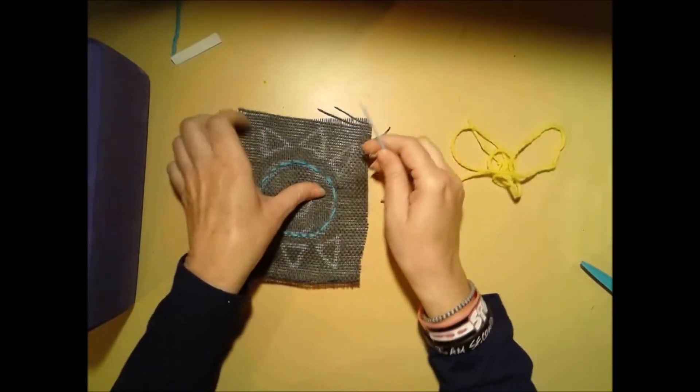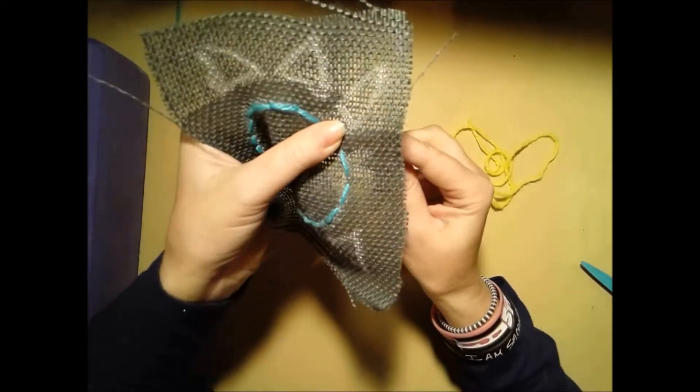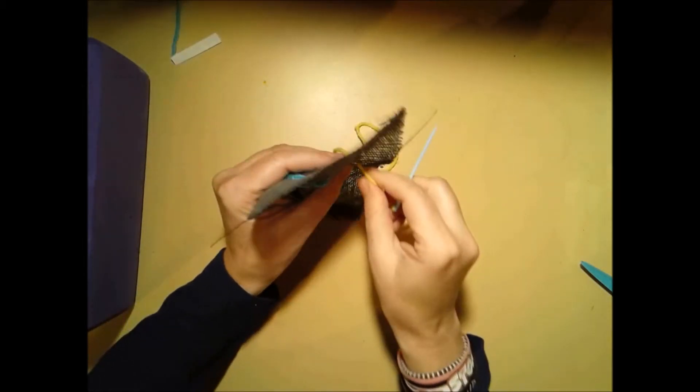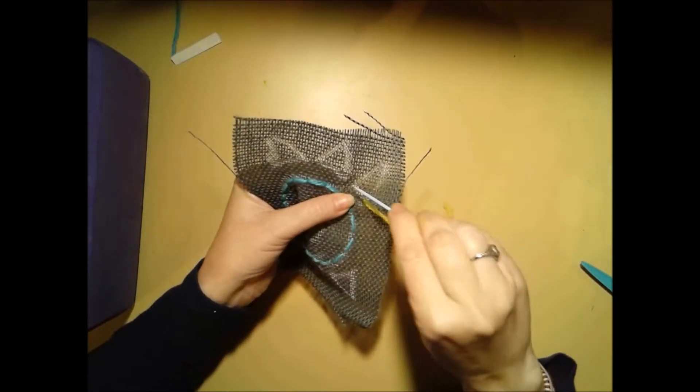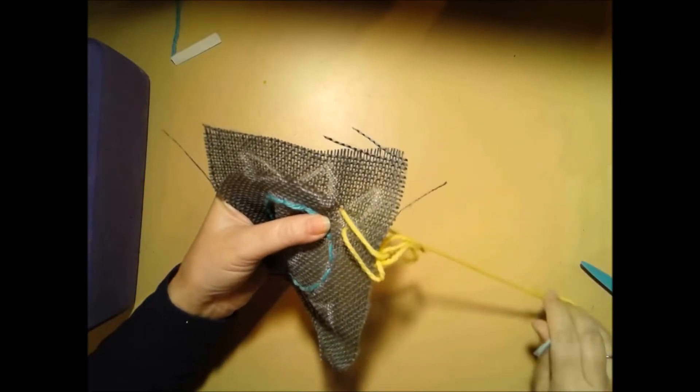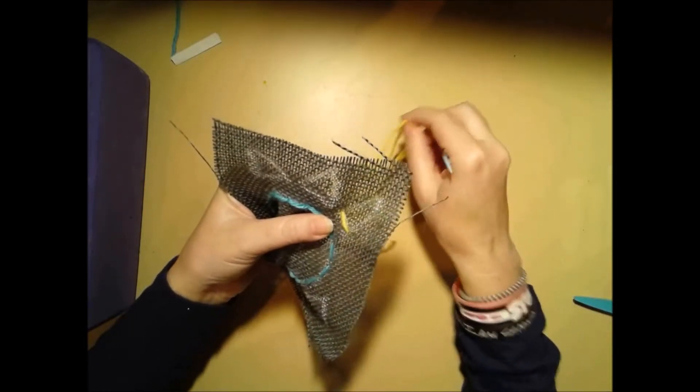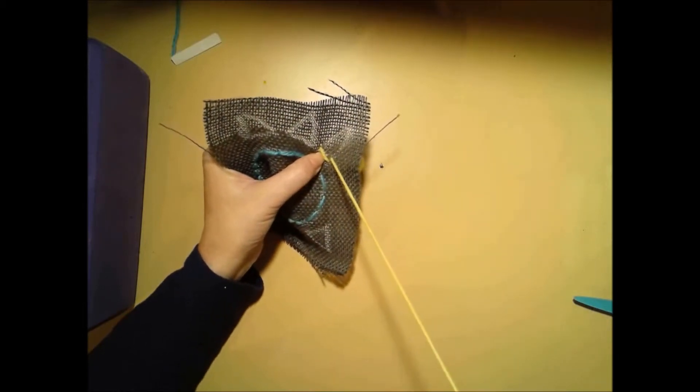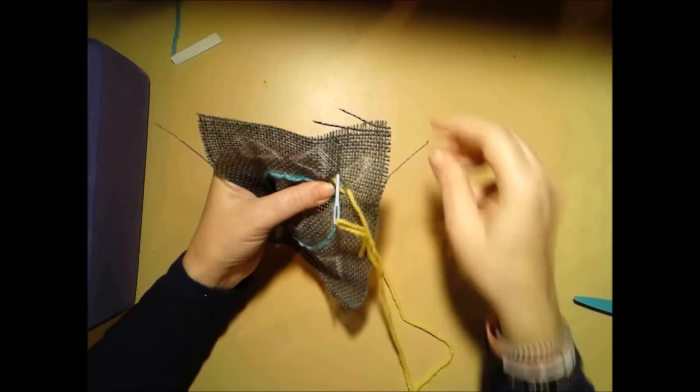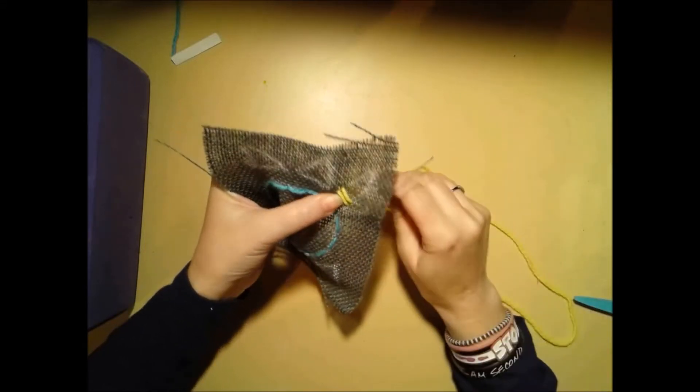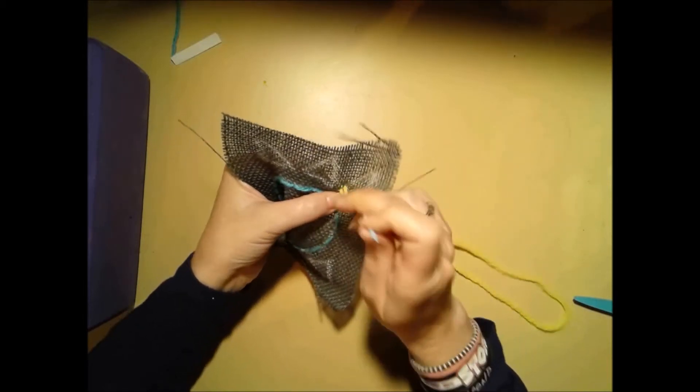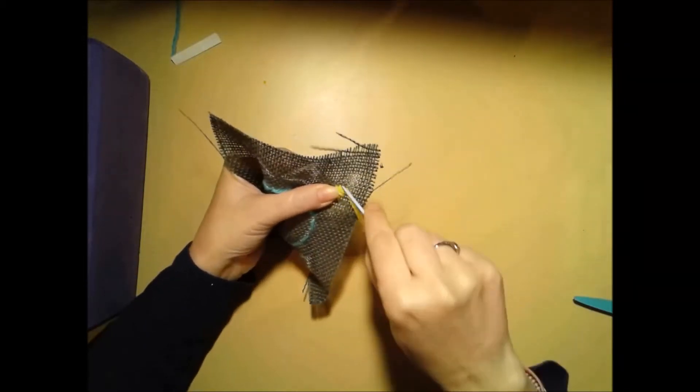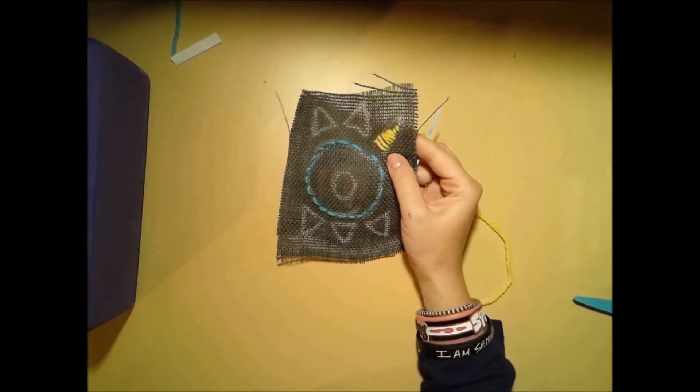To do a satin stitch, you're going to start in the back again. Just find where you need to go. Pull it up all the way, keep pulling until it stops. And then I'm going to go straight across. And then I'm going to start right beside where I just went. So I'm going to come up again and go across again. I'm just going from the side of my shape to the other side of my shape. So now I have that part that's colored in.